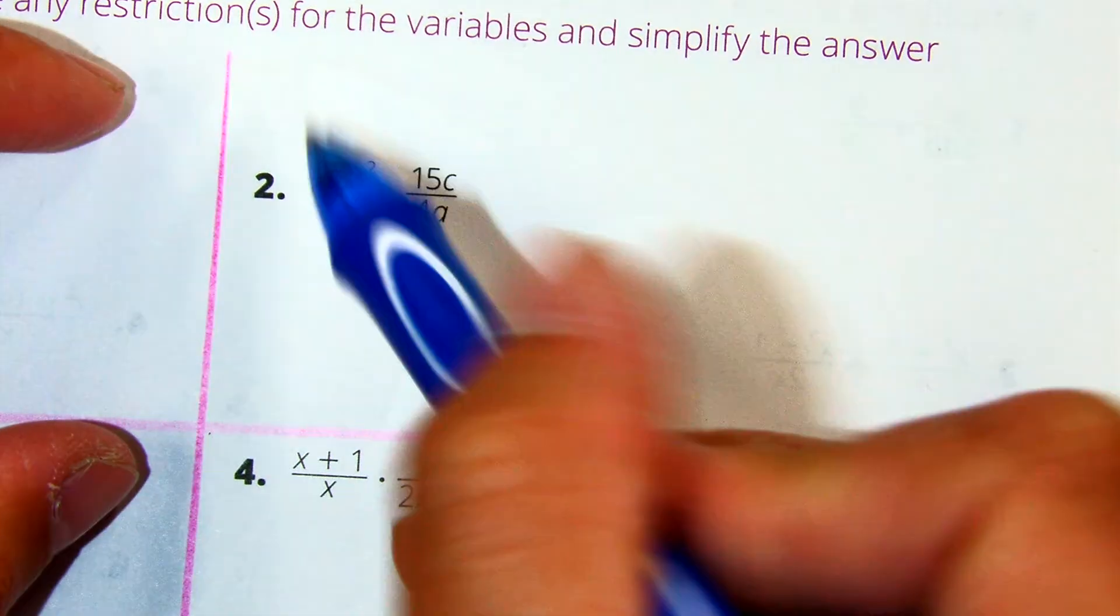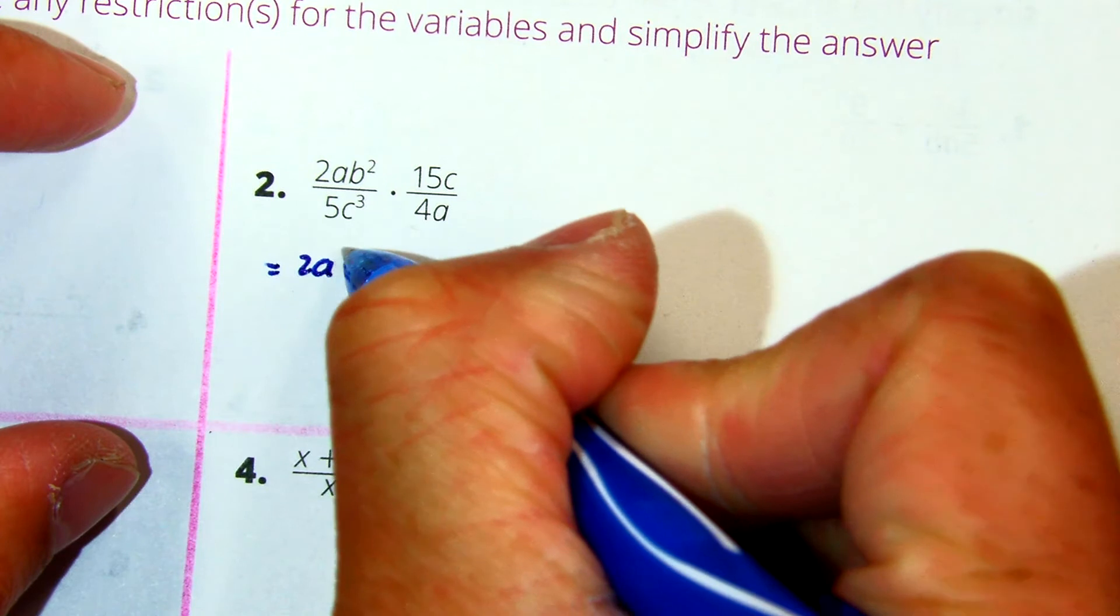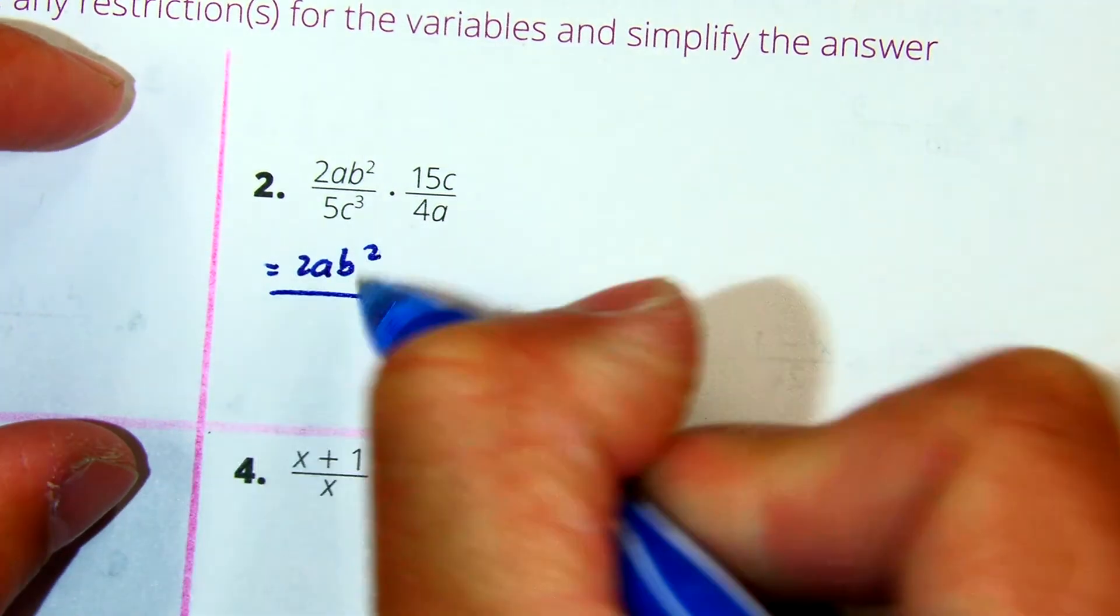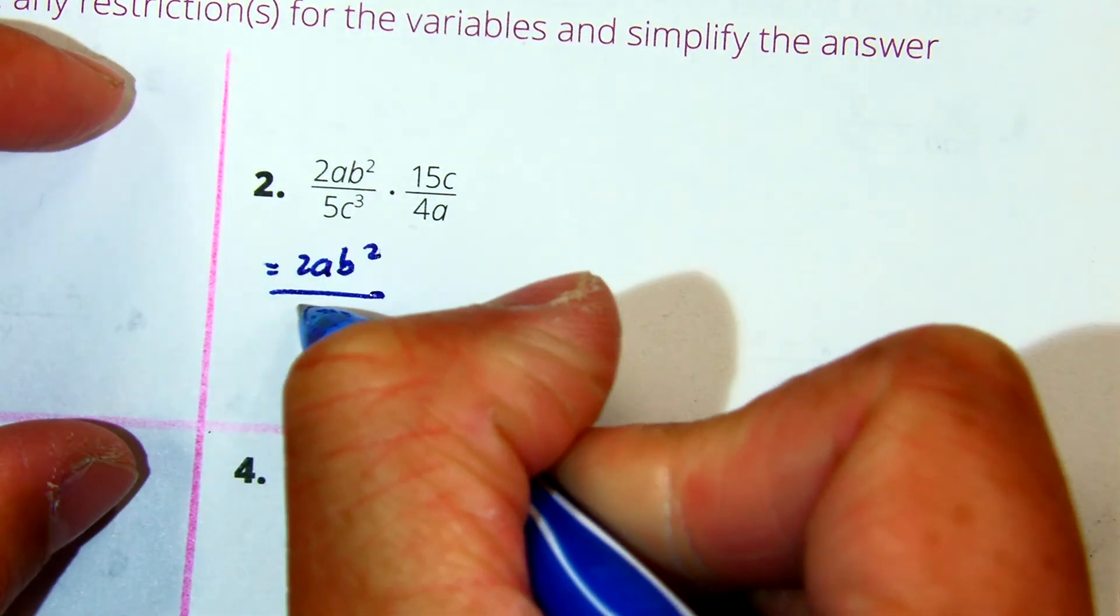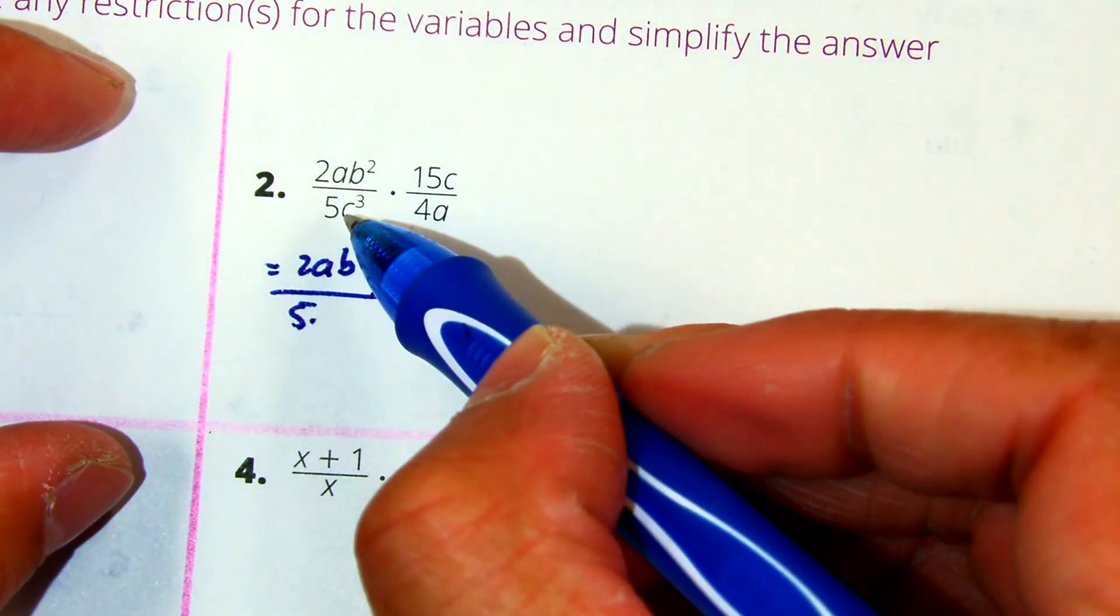I have 2ab squared, 5c to the... now I'm going to break up c into factors, prime factors.